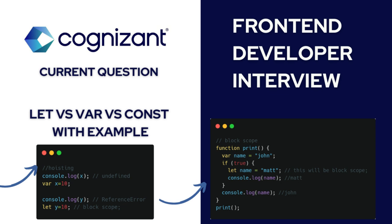As we can see, we are getting a reference error — we cannot use the let keyword before declaration. If we try to print above x, x gets hoisted but y is not going to hoist. So x will be attached to the global window object with an undefined value, while y will be in the script block, separate from the global window object, and will be in the temporal dead zone.